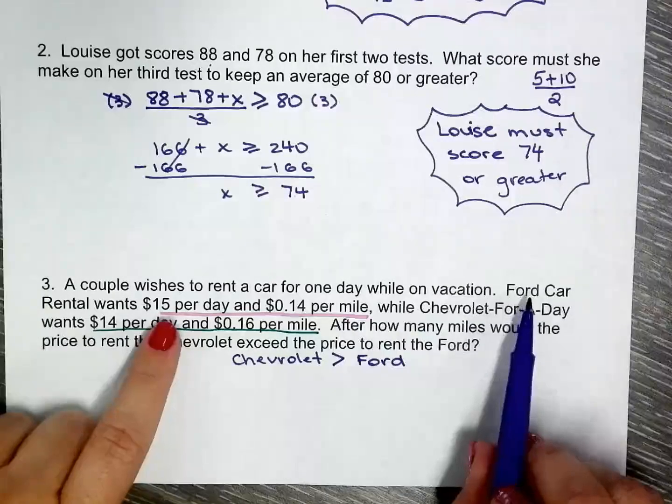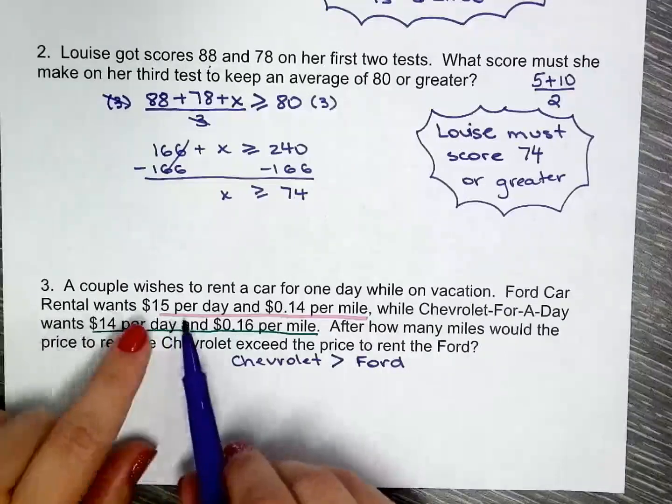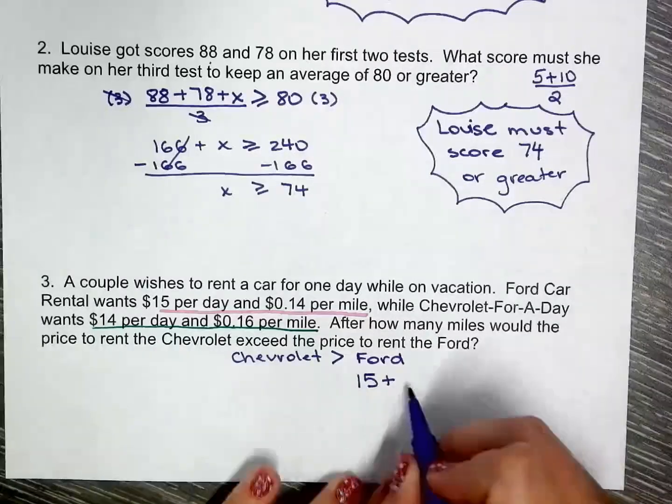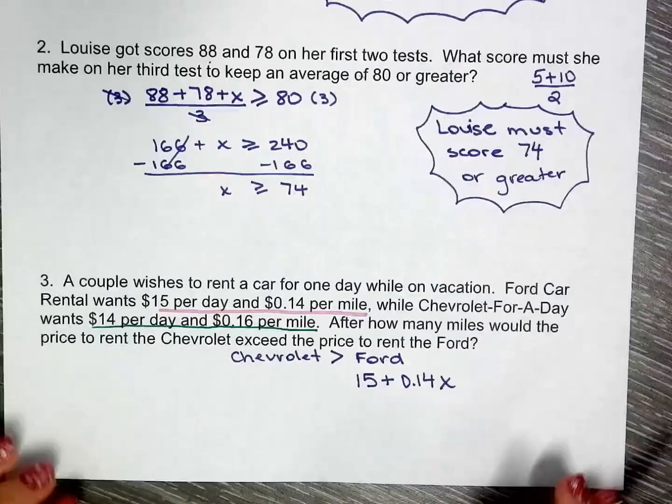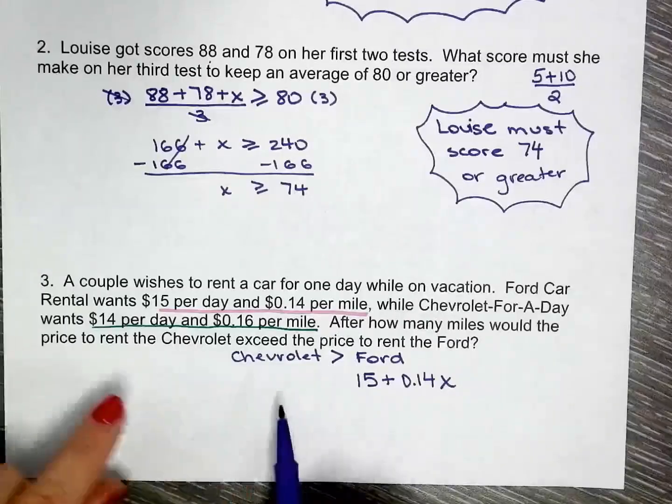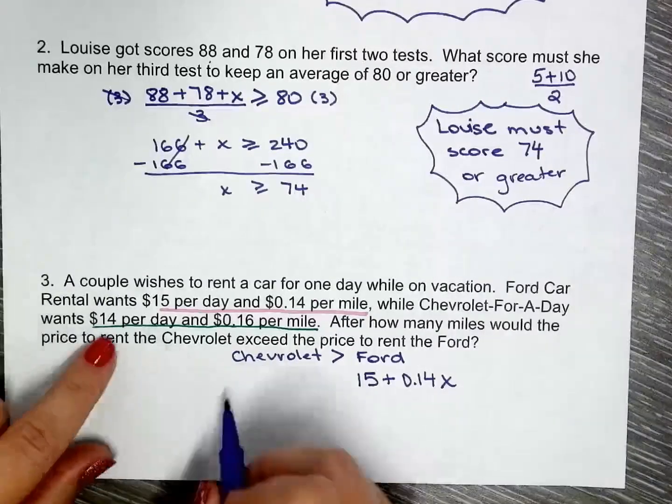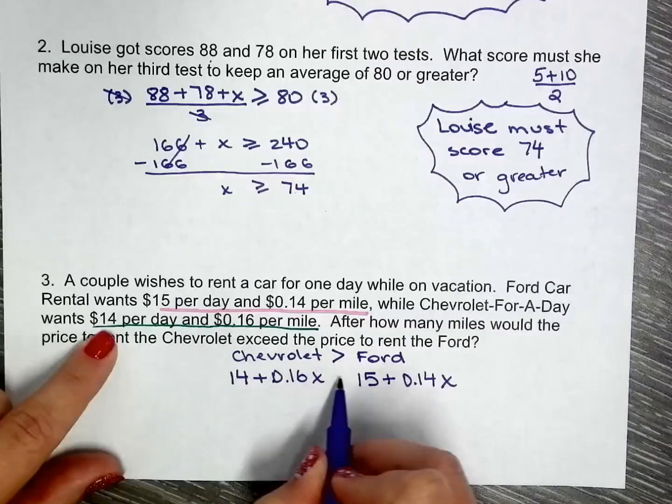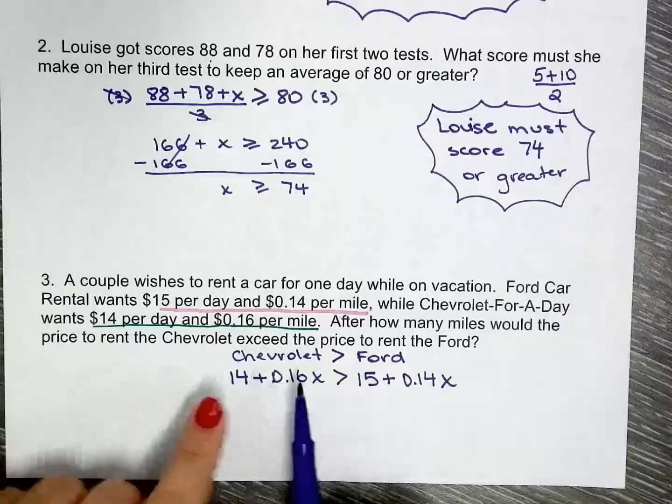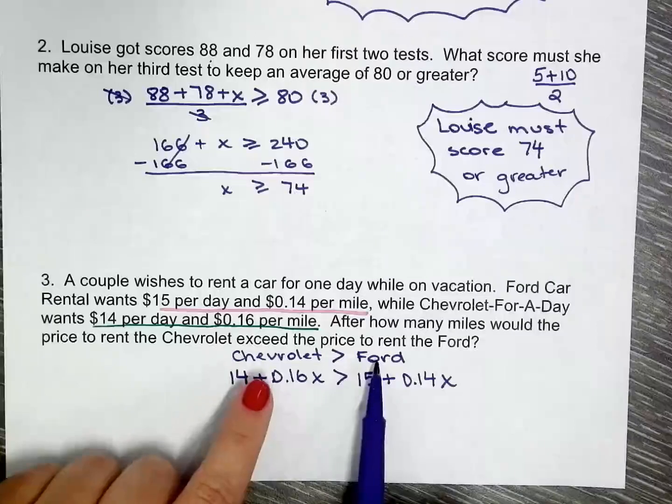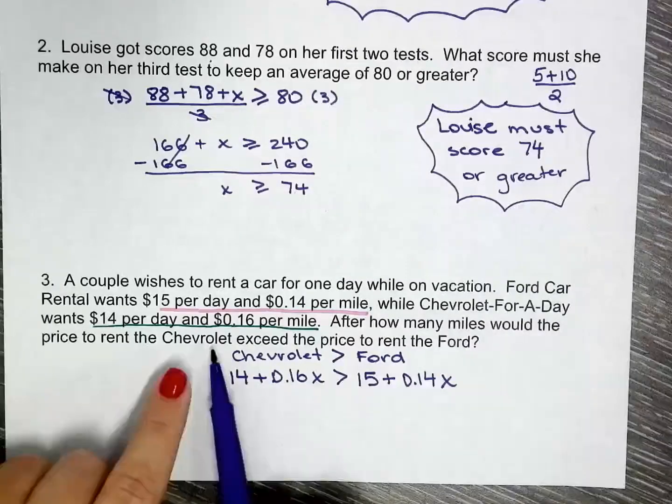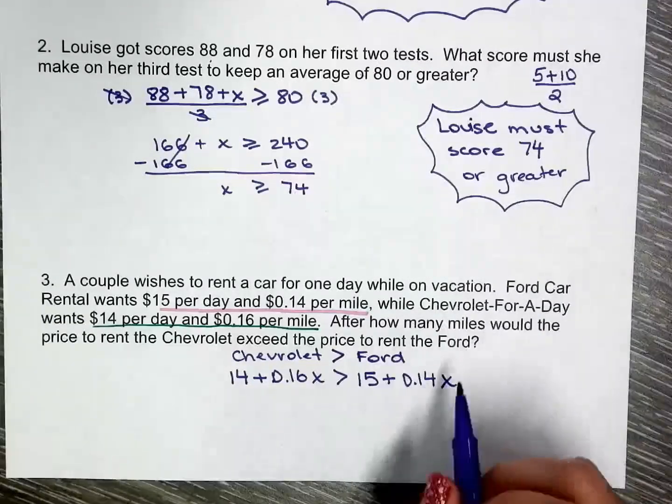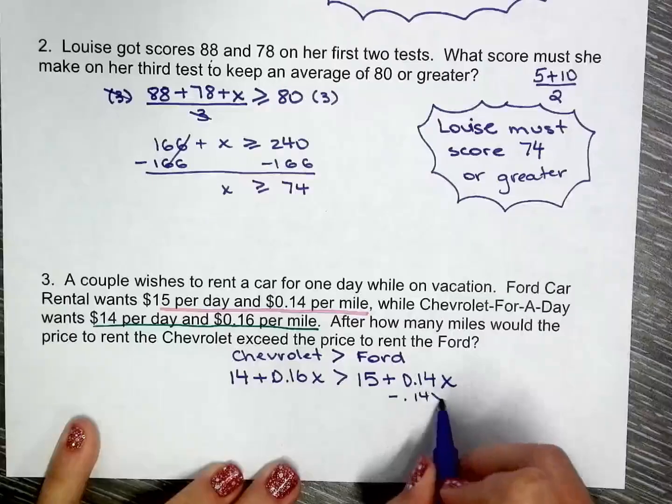So let's set it up. Ford Car Rentals wants $15 per day and $0.14 per mile. You can call X or M, whatever. And Chevrolet For A Day, $14 per day and $0.16 per mile. Now when you solve that, that's what's going to give you when is Chevrolet greater than Ford. We're going to move things around here. I will take away 0.14X from both sides, and I will also take away $14 from both sides. This is Algebra 2, you can handle two steps at once.